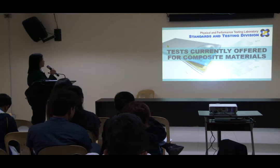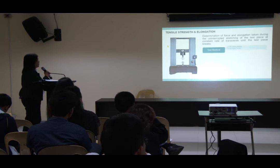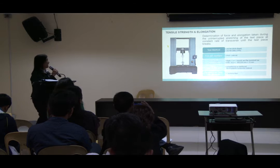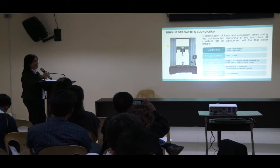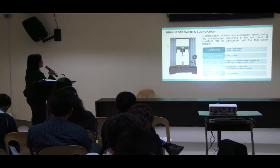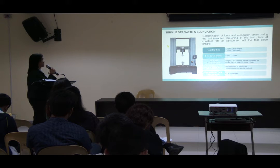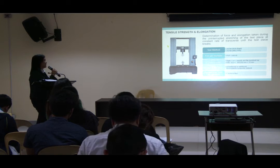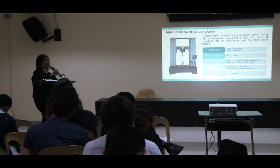Currently, the physical performance tests offered include: first, tensile strength and elongation, which is the most common of all mechanical tests. It is the determination of force and elongation taken during an axial stretching of the test piece and concentrating on cross-section under the test piece bridge. We use the test method ASTM D638 for plastics.